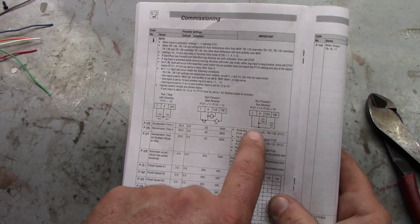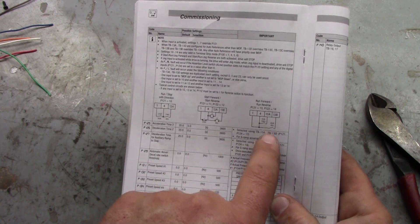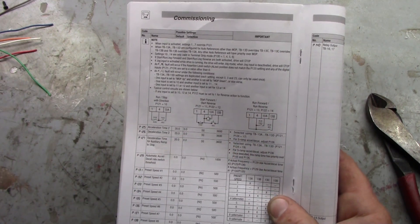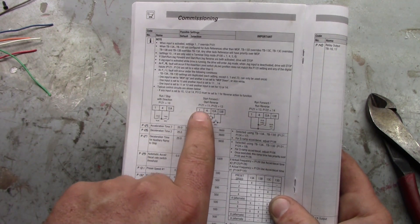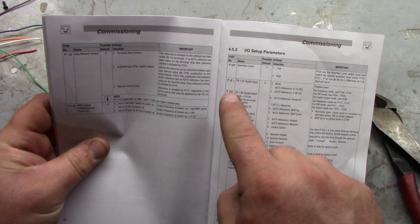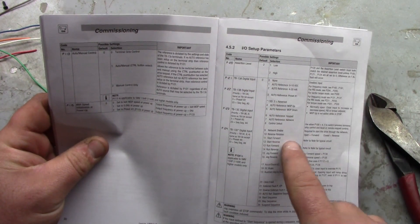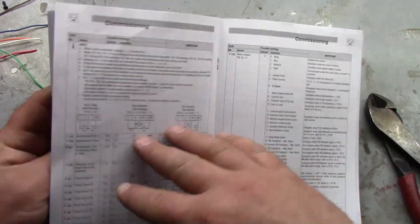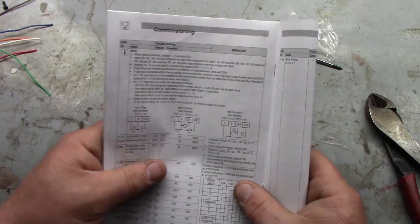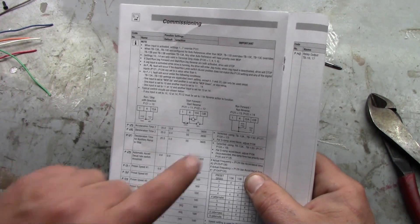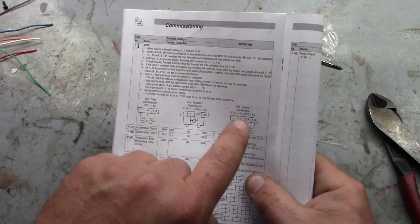If you look at these, it tells you exactly what the parameters should be. So parameter 121 and 122 should be 11 and 12 respectively. So 121 should be 11, which is start forward, and 122 should be 12, which is start and reverse. This one here is basically the one I'm going to use. I'm just going to add an extra toggle switch between one and four to kill power.